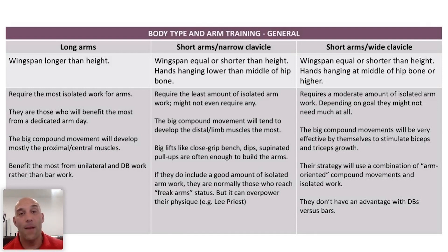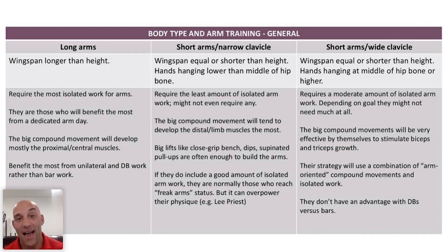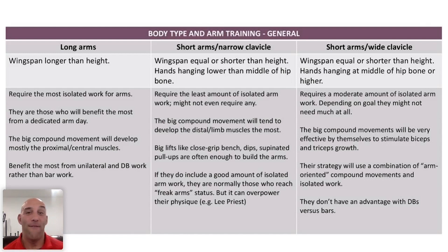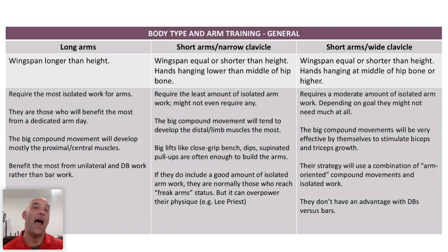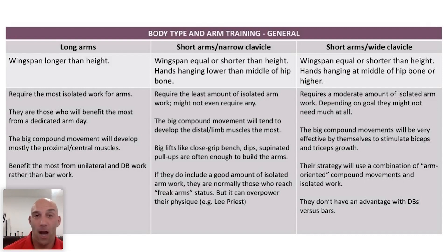If you have a narrow clavicle and short arms, these are the people who require the least amount of isolated work for arms. They probably don't even need any direct biceps or triceps work — these muscles will grow maximally just from big pressing or pulling movements. The flip side is that it's very hard for them to build the chest and lats. I have a friend, a bodybuilding coach, with very narrow shoulders and very short arms, who has monster arms — 19-inch arms at five foot two — and he doesn't train arms at all. He also has big traps and never trains traps, because every time he pulls or pushes, his arms take over.